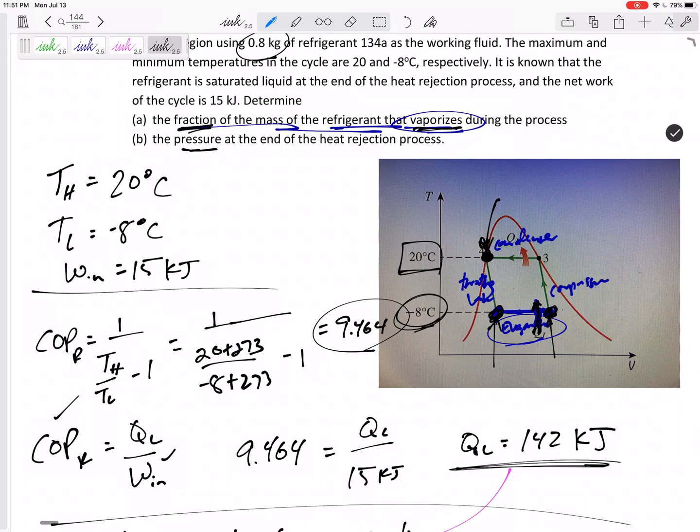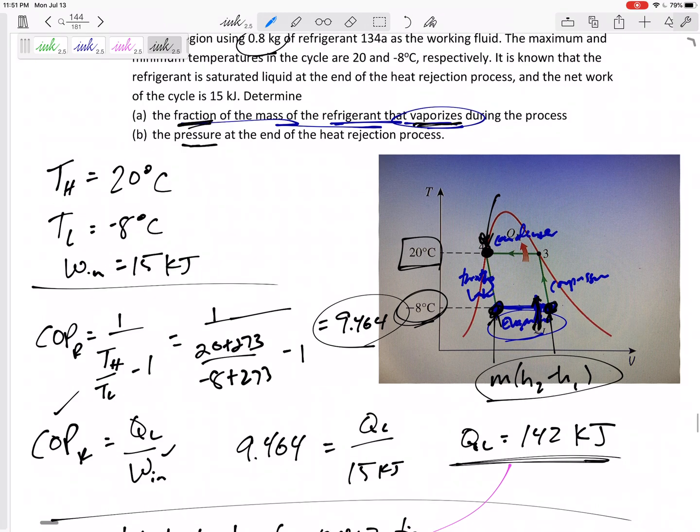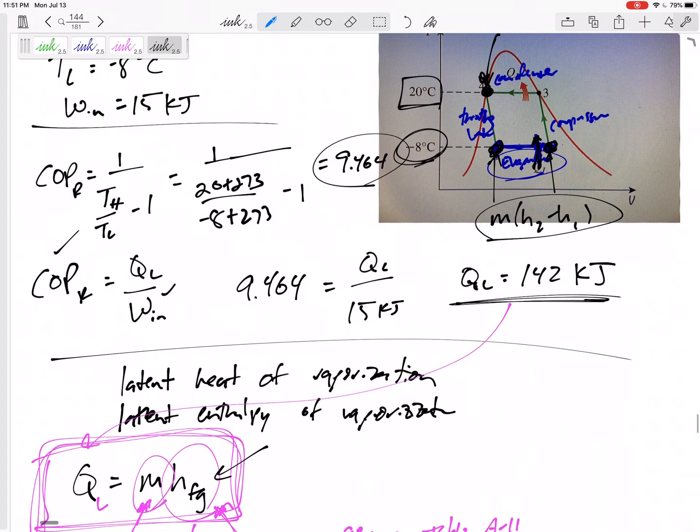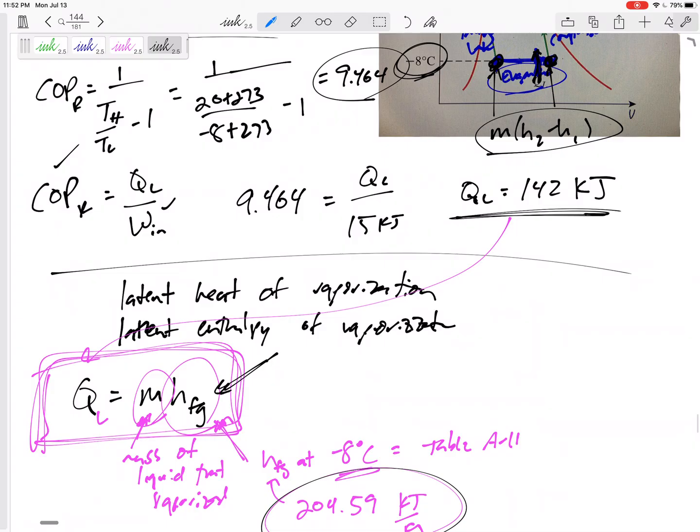So sometimes with these refrigerators and heat pumps, instead of just giving you the QL or QH, there's another way to find them. Many times it is M times delta H, so M times (H2 minus H1). In this one, it is that way. Or if it is an isothermal expansion, it is the mass that vaporizes times the HFG, the latent heat or latent enthalpy of vaporization. Okay, let's move on.